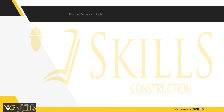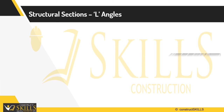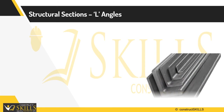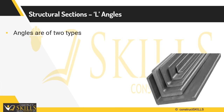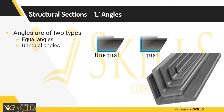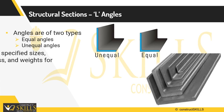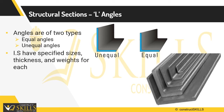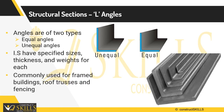Angle sections are L-shaped and have two legs that come together at a 90-degree angle. They are commonly available in two types: equal angles and unequal angles. They have the advantage of being easier to join since the 90-degree angle gives more degrees of freedom, and are generally used for roof trusses and fencing.